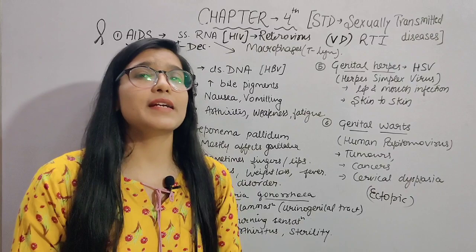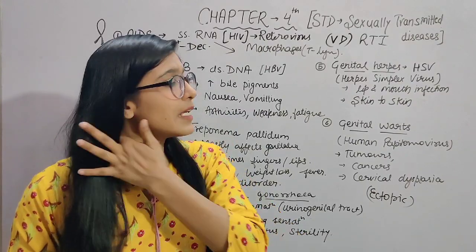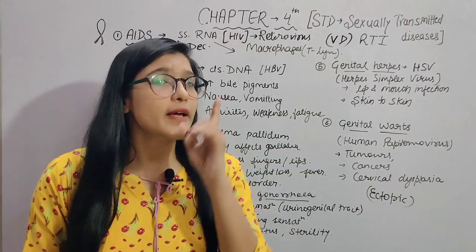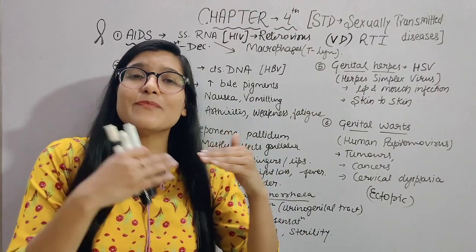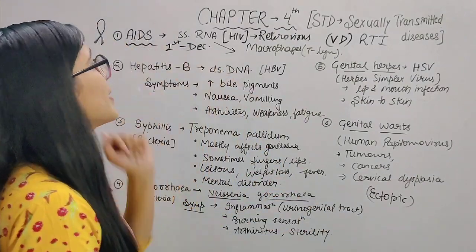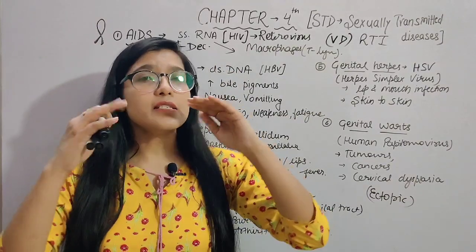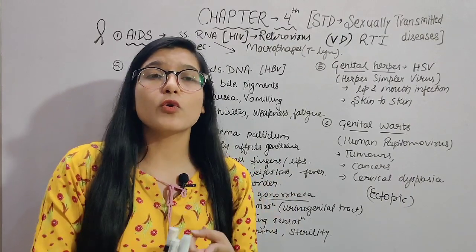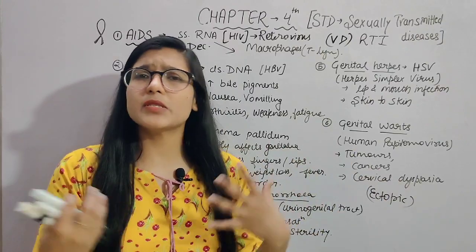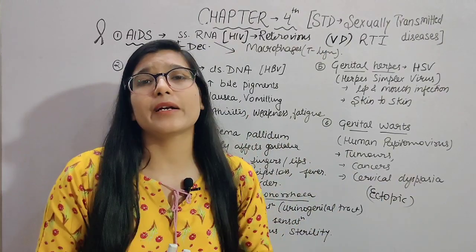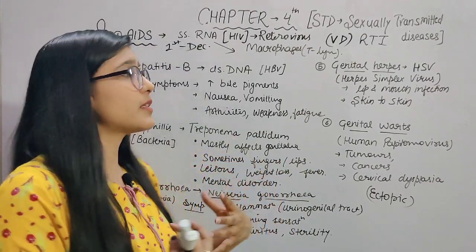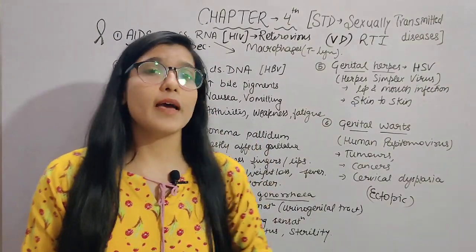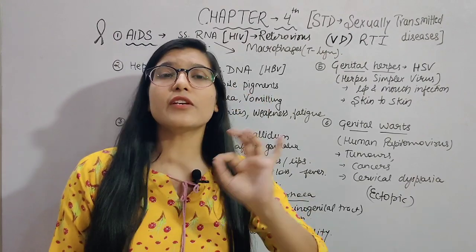Because HIV attacks T-lymphocytes and macrophages, their numbers gradually decrease, and the immune system of the AIDS-affected individual becomes weaker. That is why it is called AIDS — Acquired Immunodeficiency Syndrome. Symptoms include body weakness, the individual becoming prone to many other diseases, weight loss, loss of appetite, weakness, nausea, fatigue, and general poor health. One of the transmission routes is sexual transmission.